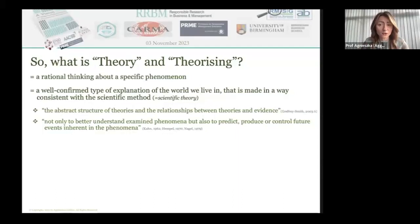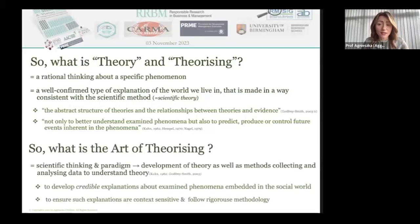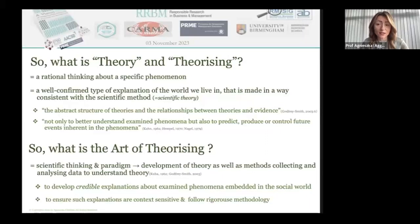The goal of such knowledge is not only to better understand the examined phenomenon that we are interested in, but also to predict, produce or control future events and theories that are inherent in that phenomenon. It is important to emphasize that scientific thinking is an integral part of a paradigm that, in Kant's view, reflects the development of theory as well as the method of collecting and analyzing data to understand the theory being investigated, which collectively comprise traditions of scientific research in a particular scientific field.